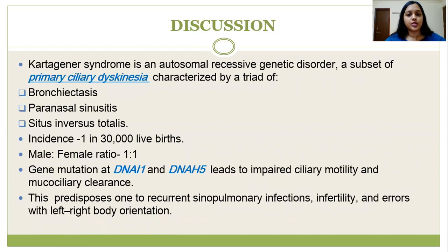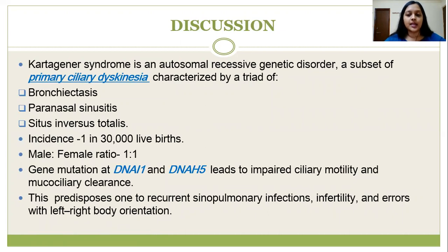Kartagener's syndrome is an autosomal recessive genetic disorder, a subset of primary ciliary dyskinesia, characterized by a triad of bronchiectasis, paranasal sinusitis, and situs inversus totalis. The estimated incidence is 1 in 30,000 live births. Male-to-female ratio is 1:1. A gene mutation at DNAI1 and DNAH5 leads to impaired ciliary motility and mucociliary clearance, which predisposes the patient to recurrent sinopulmonary infections, infertility, and errors with left-right body orientation.